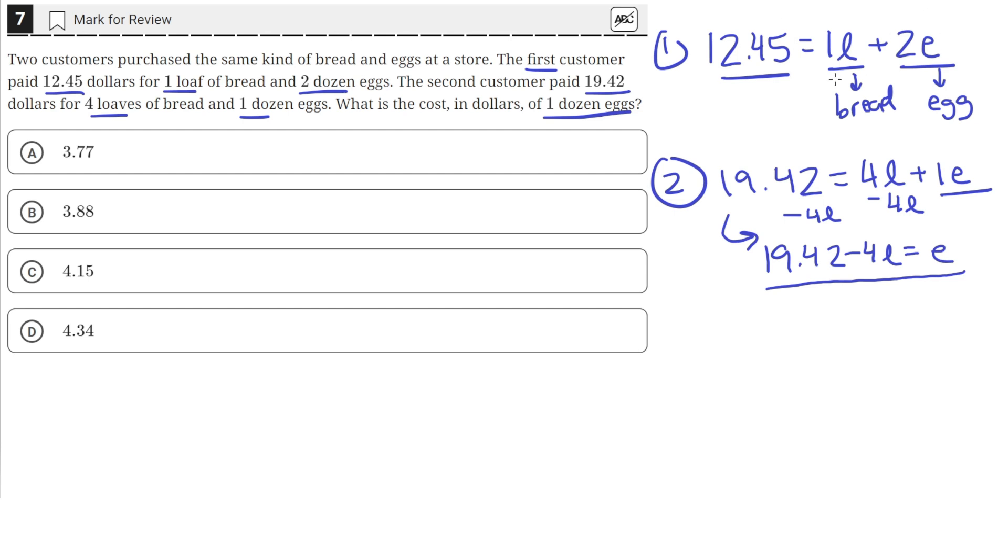We can plug that into equation one. So we're going to plug this into equation one, this value of E. So 12.45 equals 1L plus 2E. But we know that E is actually equal to this. So 2 times 19.42 minus 4L.